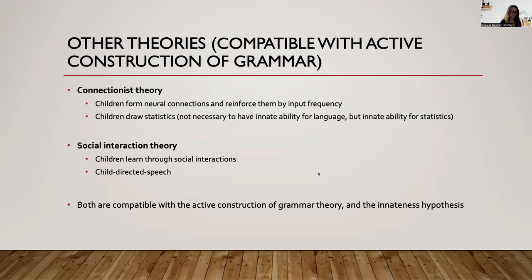Social interaction theory says that children learn through social interactions and child-directed speech is helpful and beneficial to language acquisition. Nobody would disagree that we need social interaction to learn language — we cannot learn language just on our own. Research also shows that child-directed speech — speech with higher inflection, higher pitch, and more variety in tonality — is something children prefer. However, it's not necessary. There are some cultures in which adults do not use child-directed speech, and yet children do learn language. So it's not necessary, but it's helpful.